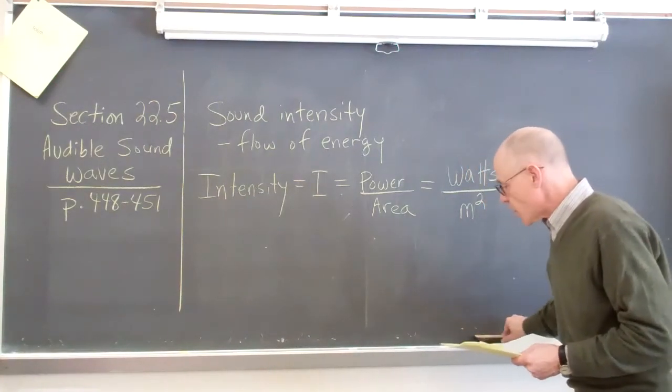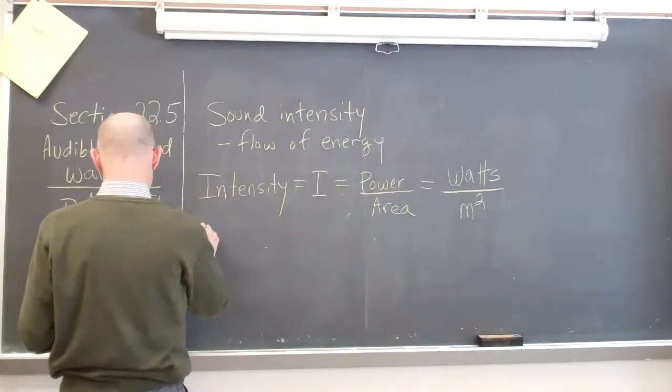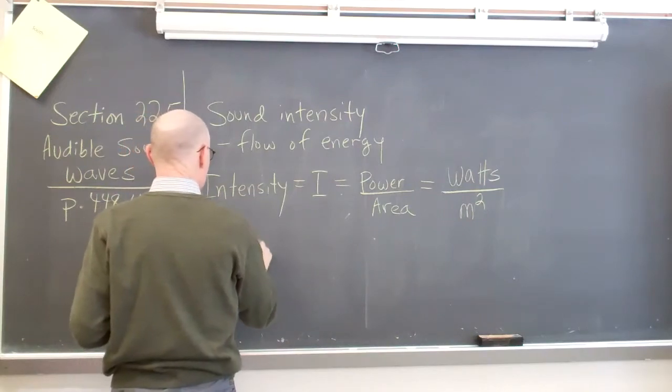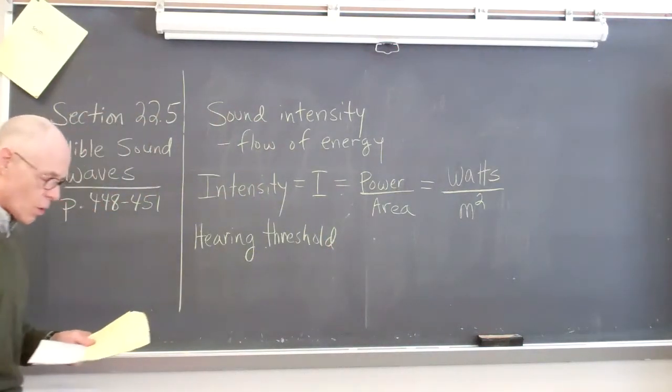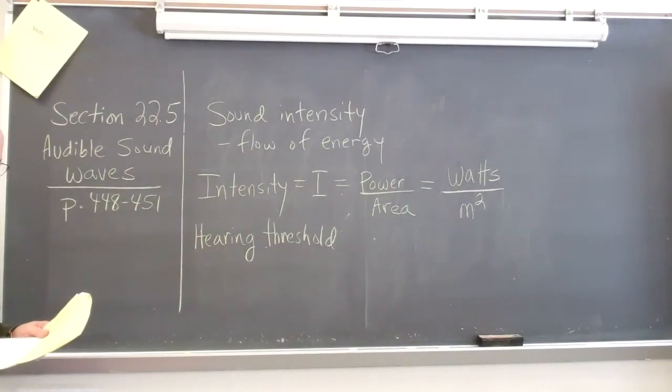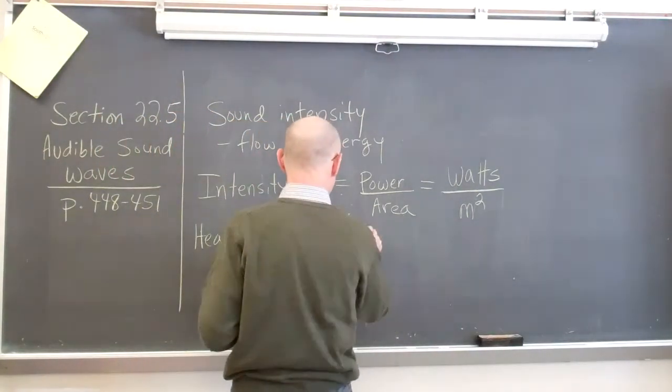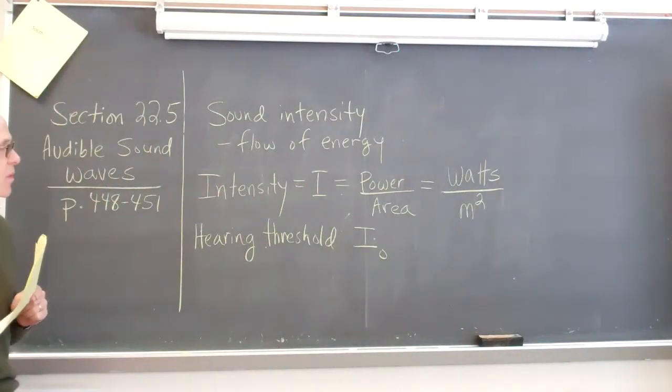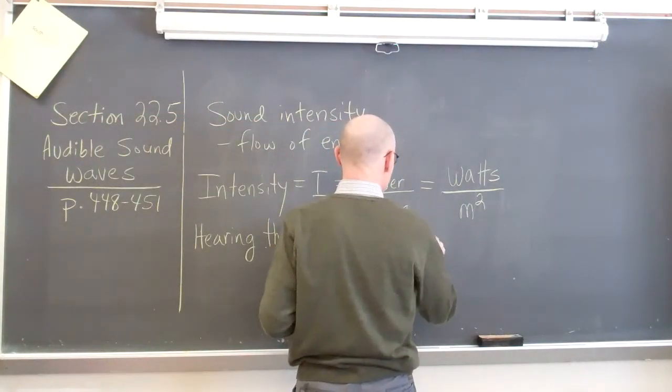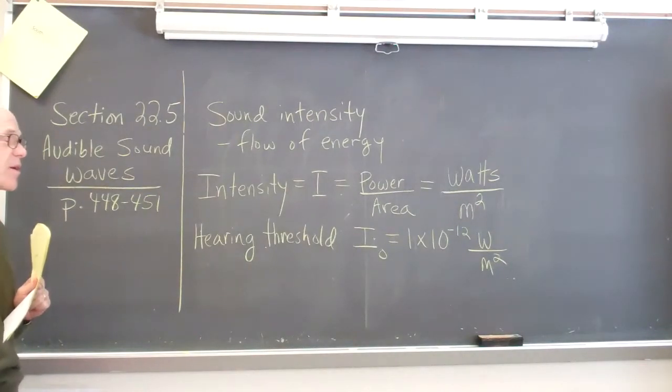Then there are several key intensities that we will first define. One is, again, based on human hearing. The hearing threshold would be the faintest or the least loud, the faintest audible sound that somebody could actually detect. And remember, we're not talking about frequency now. This is loudness. The faintest will also use the capital I with a subscript zero as the hearing threshold. And that is 1 times 10 to the minus 12 watts per square meter. You can see it's very, very, very tiny intensity.